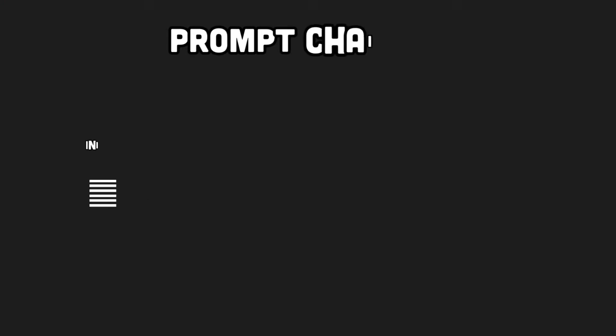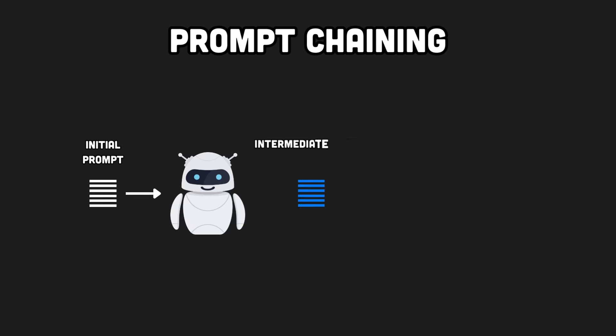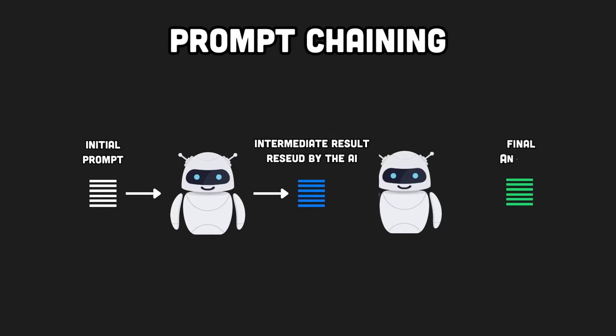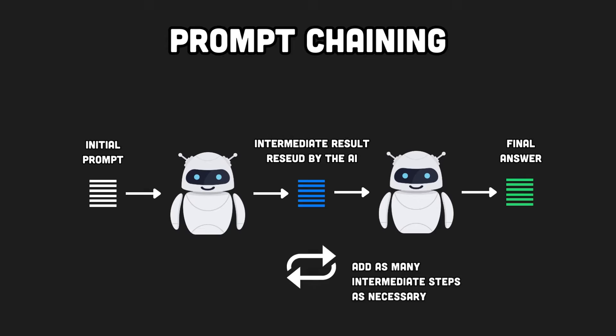So what can we do? First of all, it's important to realize that we don't need the entire content of each file to generate the readme. A simple summary of each file containing only the relevant information is sufficient — it will likely be much smaller than the original file. Doing so would solve the context problem. And how can we get a summary of each file? Again, we can use AI. The idea is to have a preliminary step where we summarize each file using ChatGPT, then concatenate all the summaries into one context, and ask the AI to generate the readme. It's a form of prompt chaining — we feed the result from a previous generation into the text of the next prompt.